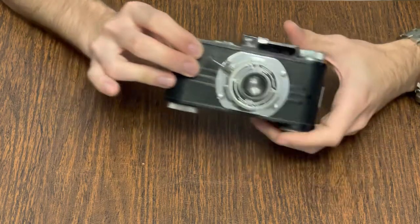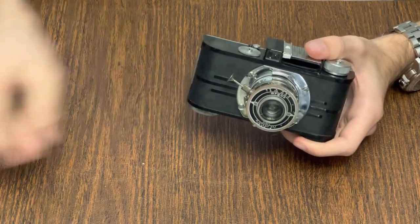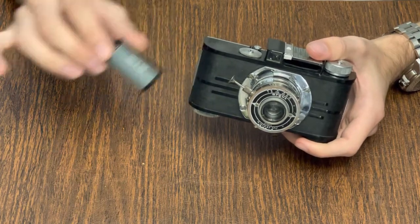It belongs to the A series of Argus cameras which are generally characterized as being snapshot cameras that accept 35mm film in 135 cassettes.